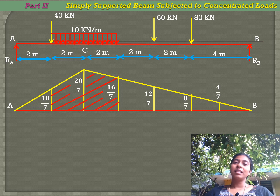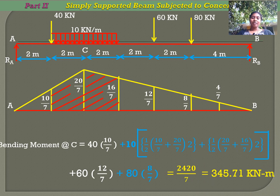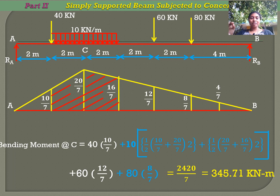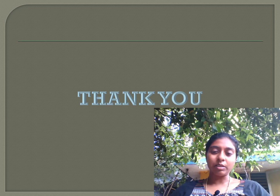For the bending moment at C, as with shear force, we multiply the magnitude by the ordinates for concentrated loads and multiply the magnitude by the area under the influence line diagram for UDL. All ordinates here are positive. First load: 40 kilo newton times ordinate 10/7, plus 10 times the area under the load, plus 60 times 12/7, plus 80 times 8/7. We get 2420/7 kilo newton meter.